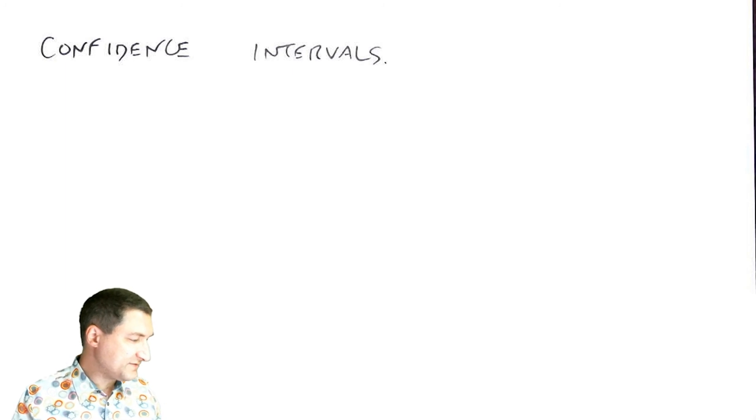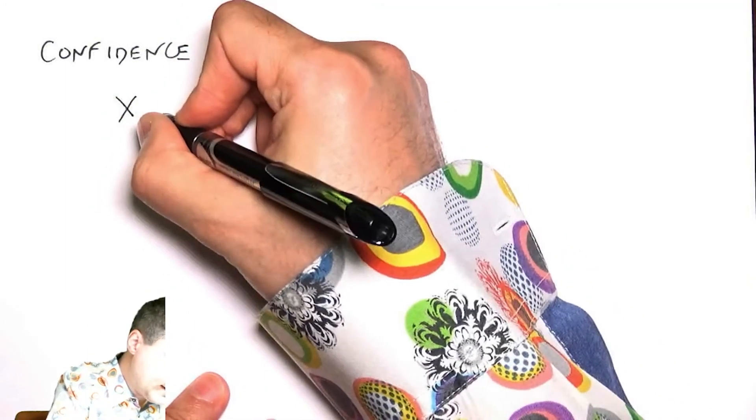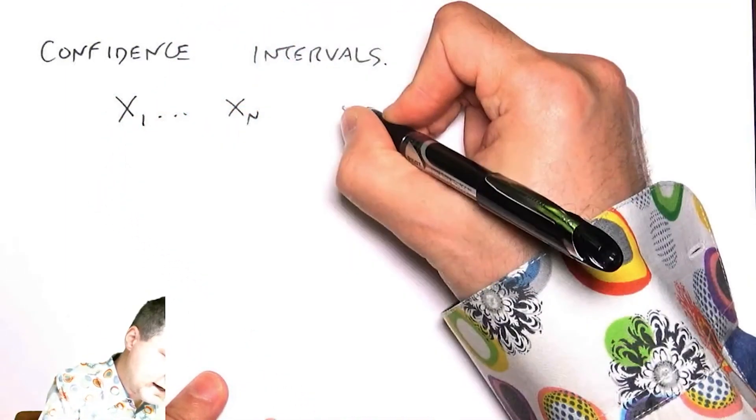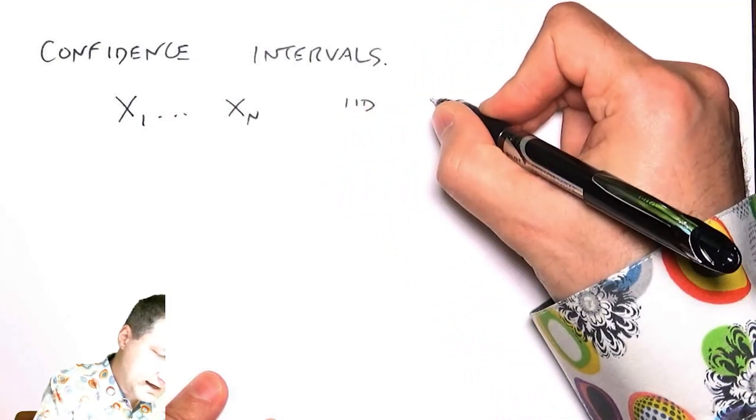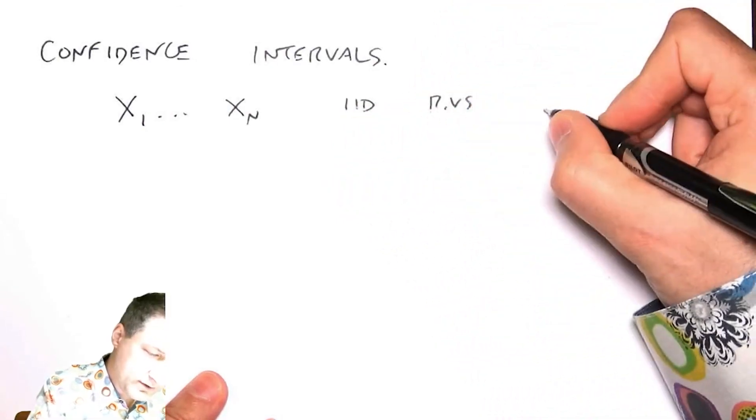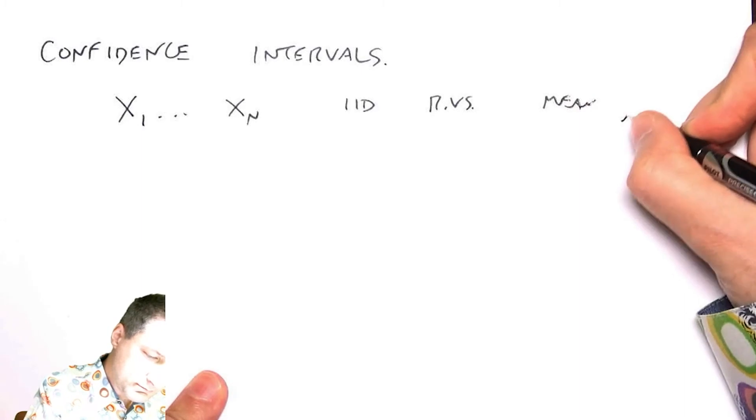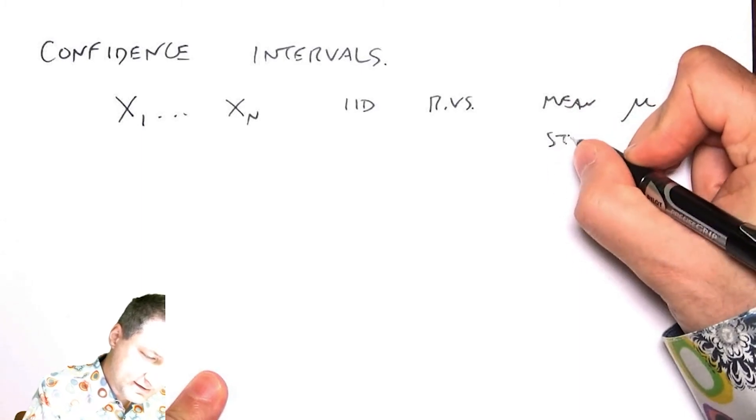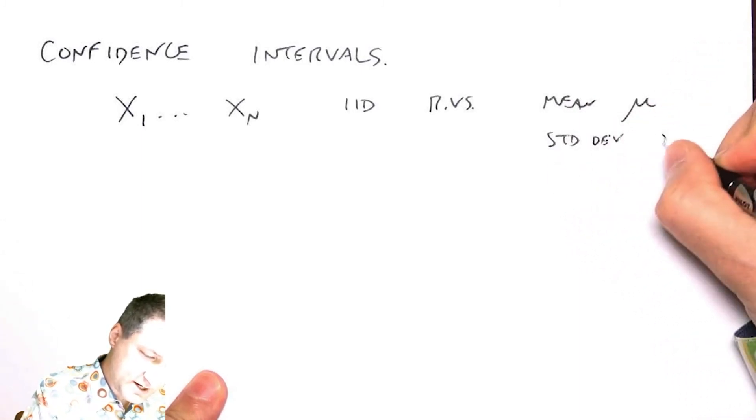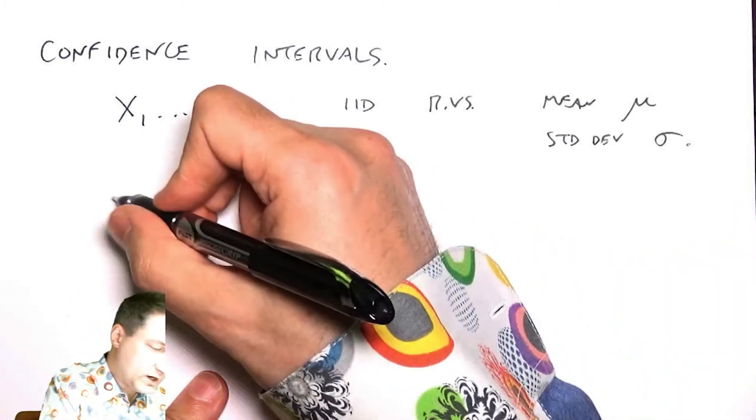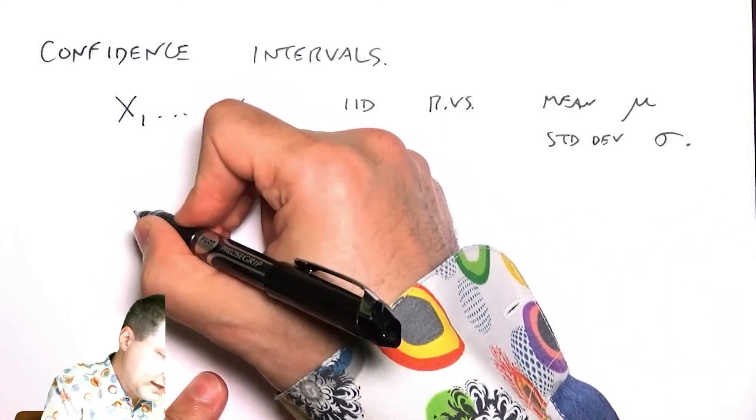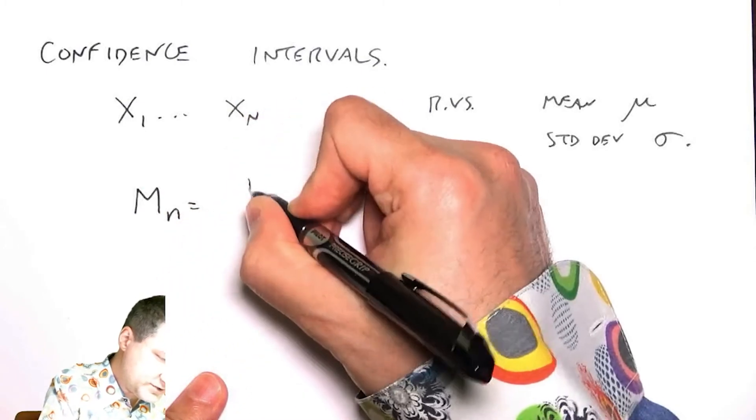The setup is the following: when X₁ through Xₙ are IID random variables with mean μ and standard deviation σ, I'm going to focus on Mₙ, which is the average of these random variables.